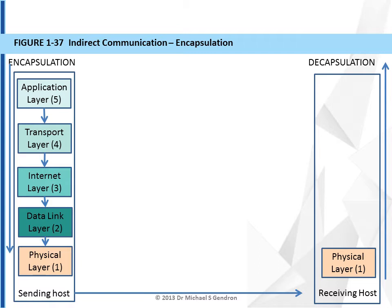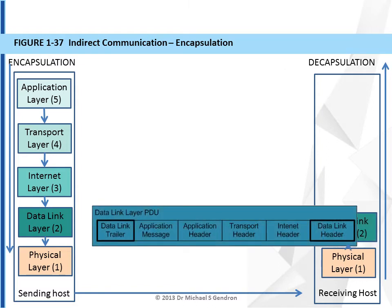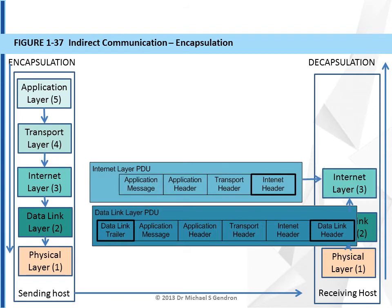Decapsulation refers to removing the payload from your PDU and passing it to the layer above. The physical layer will pass the recreated data link layer PDU to the data link layer, where it will be analyzed and the local MAC addresses will be used to determine if the message is for this receiving host. If the message is, then the data link layer passes its payload, the internet layer PDU, up to the internet layer process.